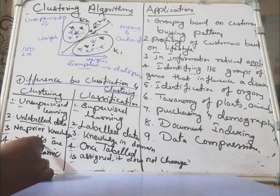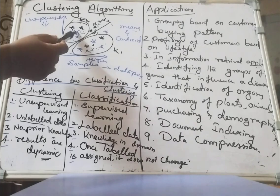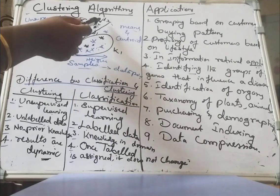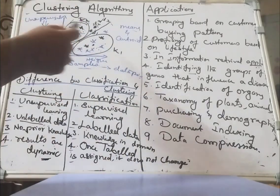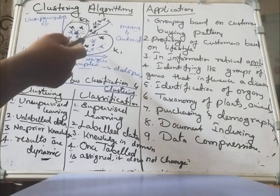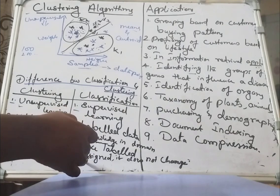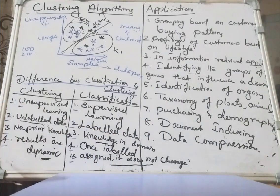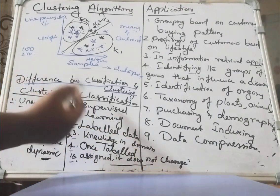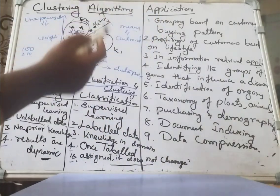Whatever clustering results are produced, they are dynamic — not static. They keep on changing, because each time you add a data point, the centroid and mean change, so you have to recompute the distance between the new point and each cluster centroid, then take the decision on which cluster to assign it to. In classification, once a label is assigned it does not change — it remains constant always. This is the major difference between clustering and classification.